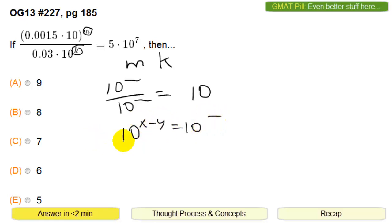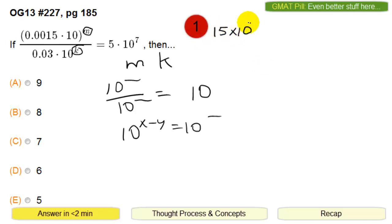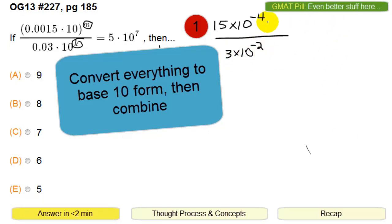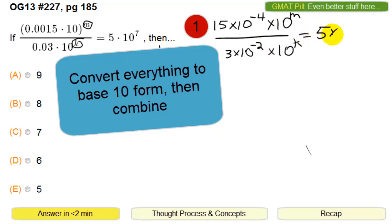So let's do it that way. This basically gets us 15 times 10 to the minus 4 power on top, and then on the bottom you have 3 times 10 to the minus 2 power. So there's a 10 to the m power here — you multiply this by 10 to the m. This one has a 10 to the k power. And then this one is basically 5 times 10 to the 7th power.